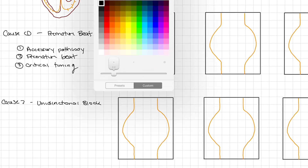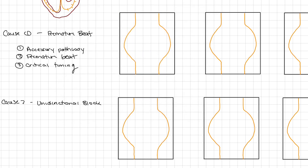Under normal conditions, the fast pathway travels quickly down the conduction pathway and causes a refractory period in the tissue. The slow impulse takes its time down the accessory pathway, and by the time it reaches the tissue leading to the ventricles, the fast pathway has already been there — the tissue is in its refractory period and cannot be stimulated. Both pathways will be out of refractory by the time the SA node sends its next beat, and the cycle repeats normally.